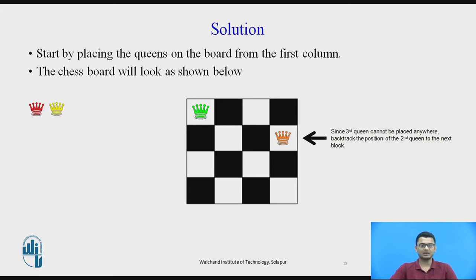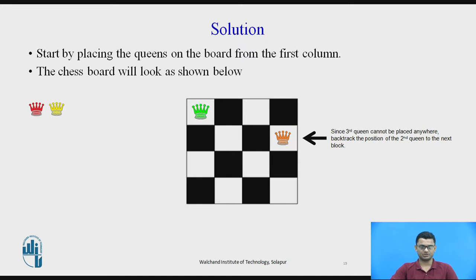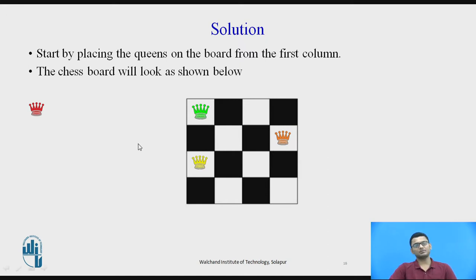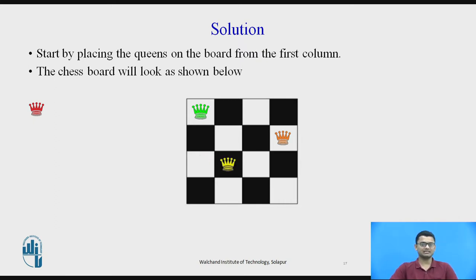Since the third queen cannot be placed anywhere on the 4×4 board, we backtrack the second queen to the next block, where this position is also safe for the second queen. Now we check for a safe position for the third queen. The third queen cannot be placed in the first column because it attacks the first queen. However, the second column is safe for the third queen as it attacks no other queen, so we place it there for the moment.